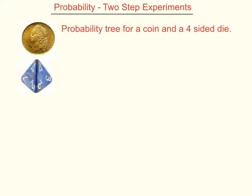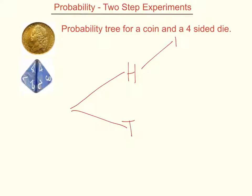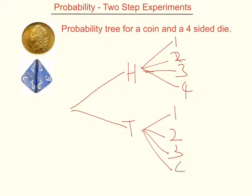It's possible to use a probability tree for lots of different sorts of events. Here I've got a four-sided dice and a coin which can be heads or tails. I'm going to treat the first event as flipping the coin, so my tree diagram has two possibilities: heads and tails. If I then roll the four-sided die, there are four possibilities: one, two, three, or four. And the same four possibilities branch from tails. So the combinations I can get are head and one, head and two, head and three, head and four, tail and one, tail and two, tail and three, and tail and four.